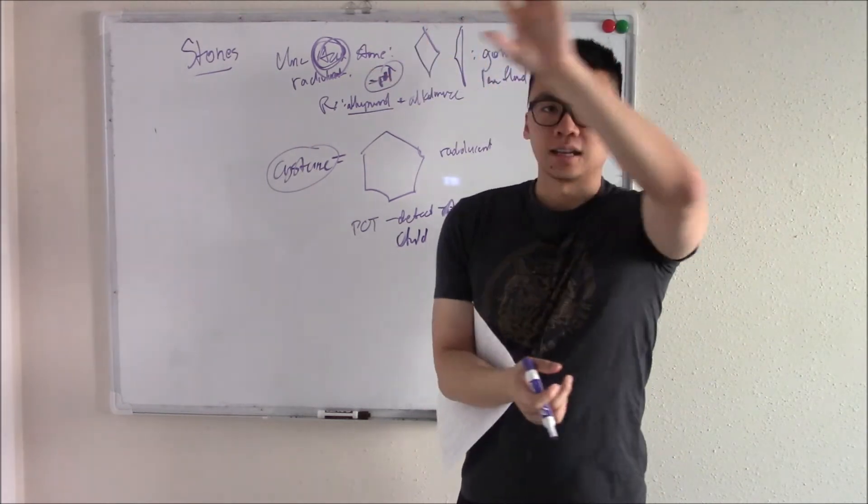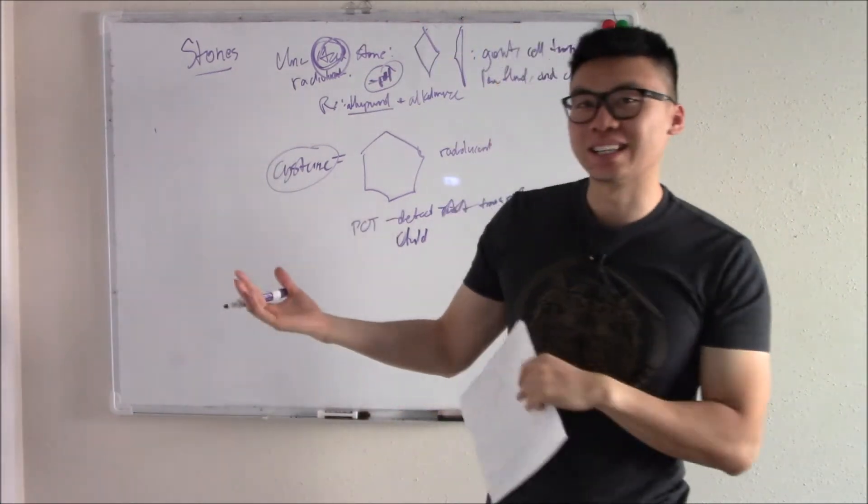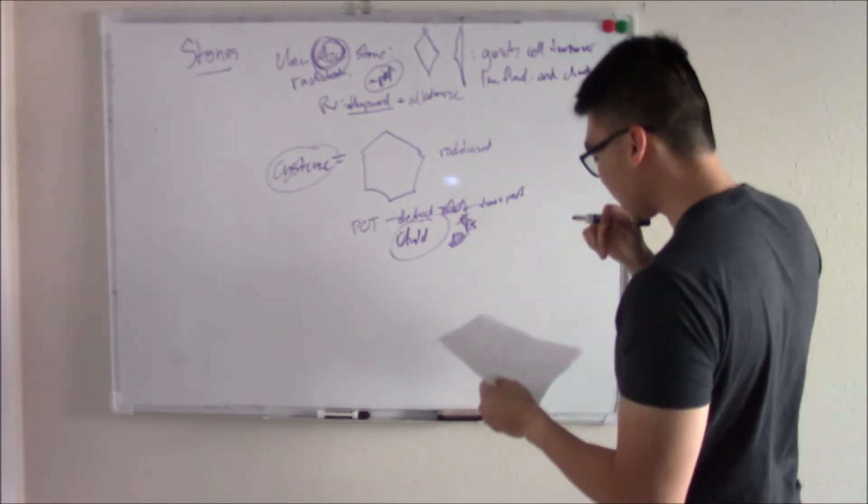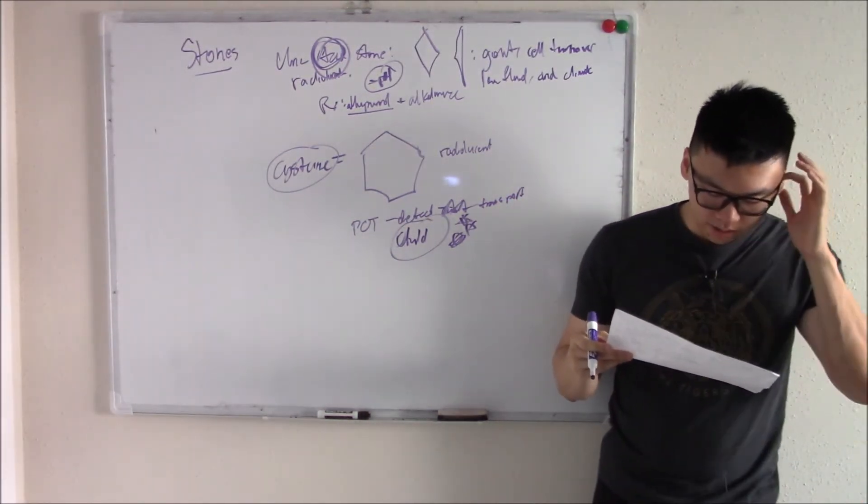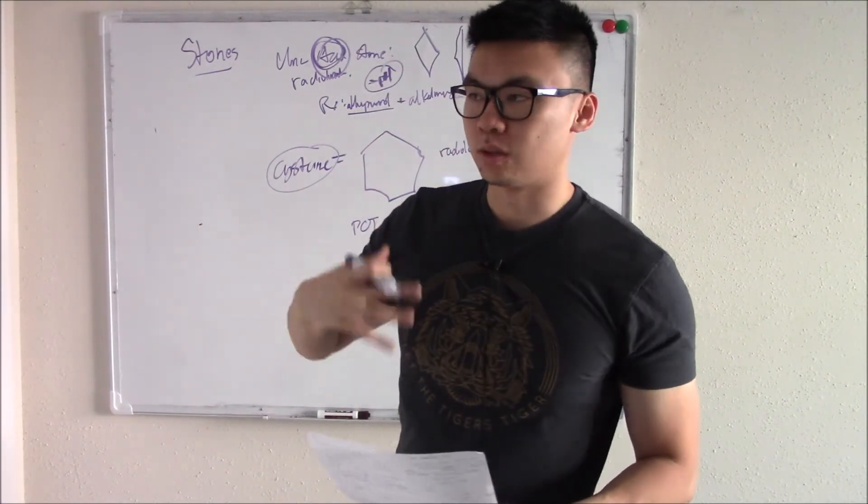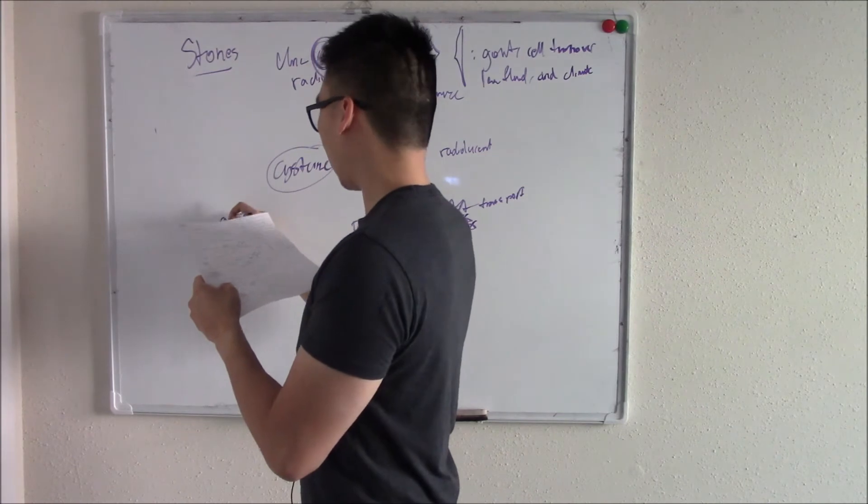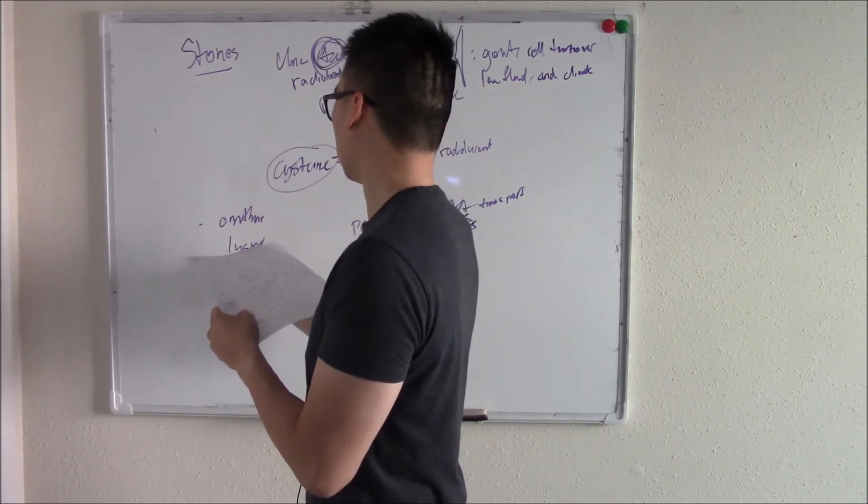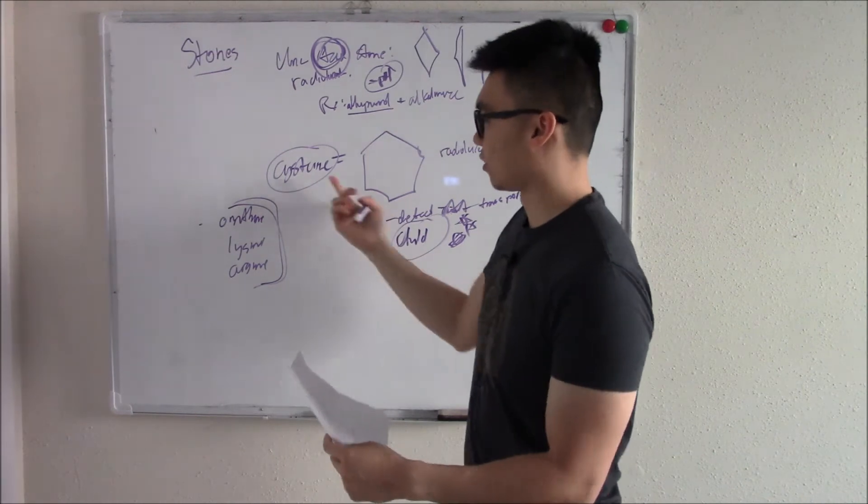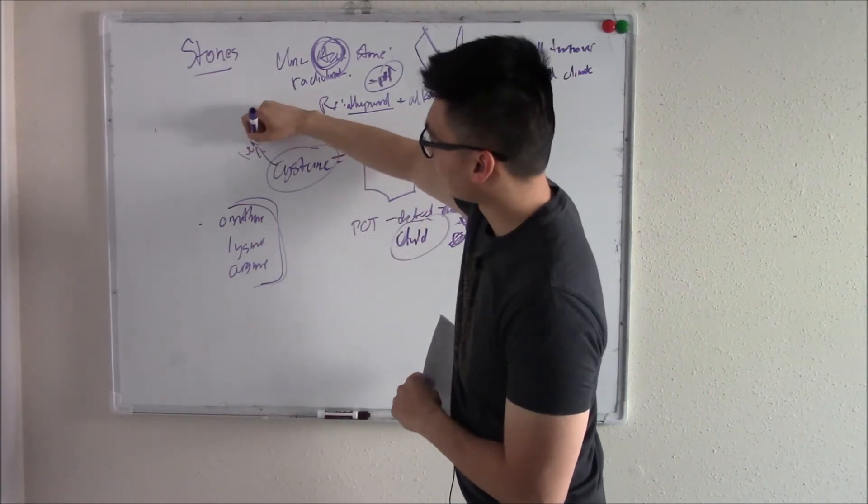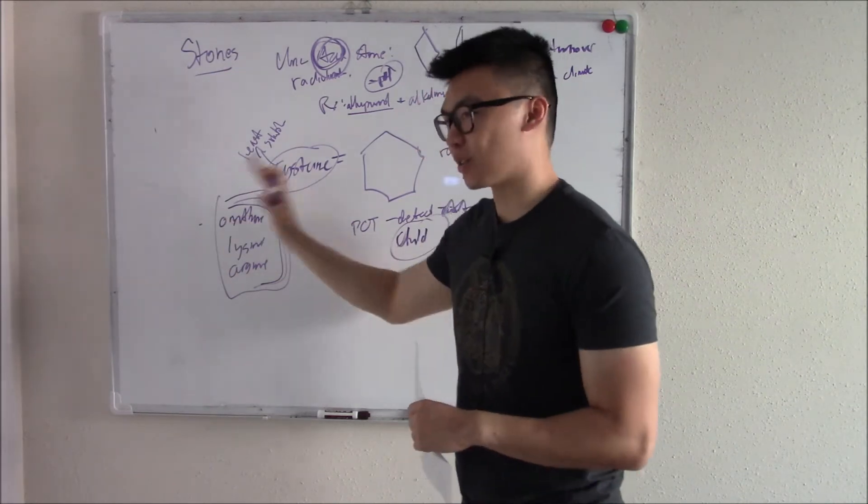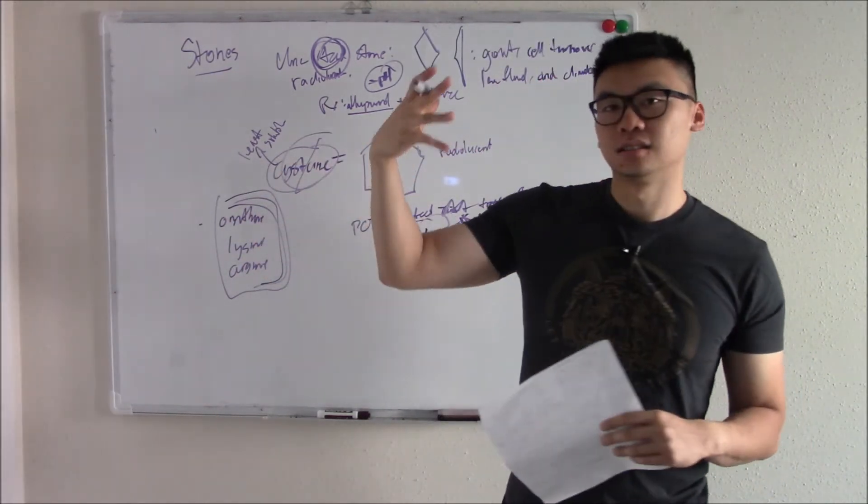There's something else you should know. Cysteine isn't the only amino acid that isn't reabsorbed. You also can't reabsorb things like ornithine, lysine, arginine. So why do we call it cysteine stones? Why don't we call it cysteine, ornithine, lysine, arginine stones? Because cysteine is the least soluble. So that's the one that precipitates most. That's the one that gives us the most headaches.